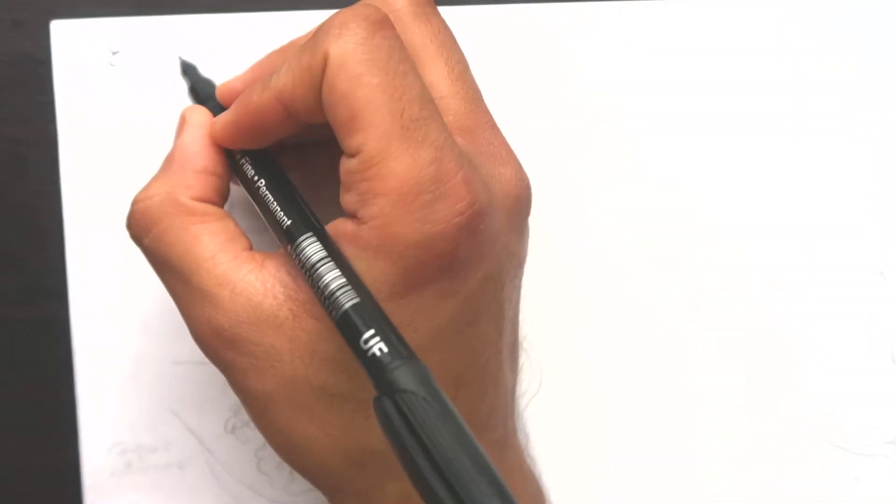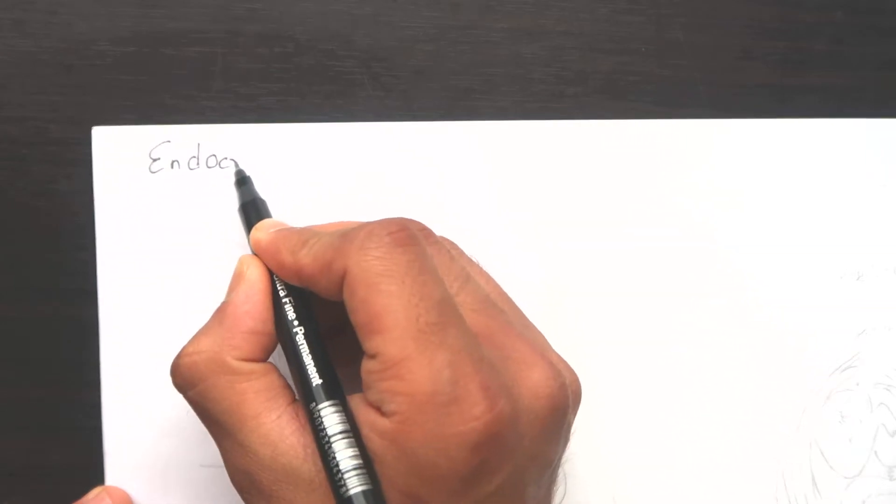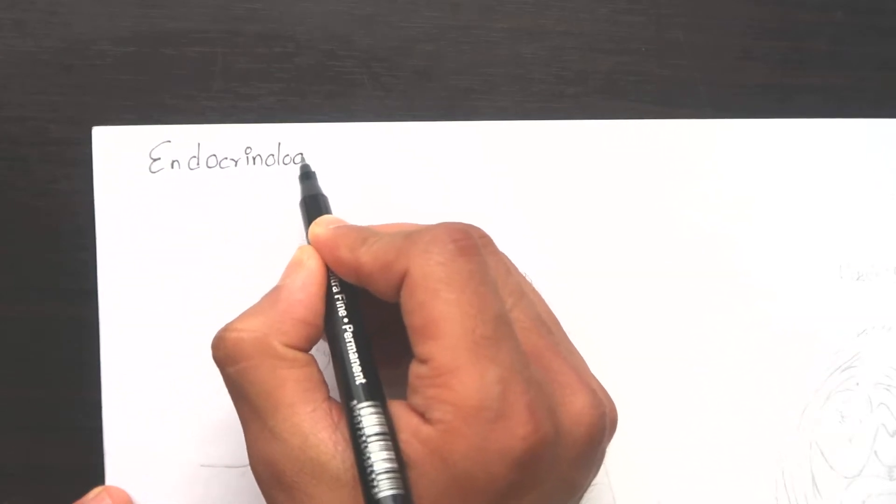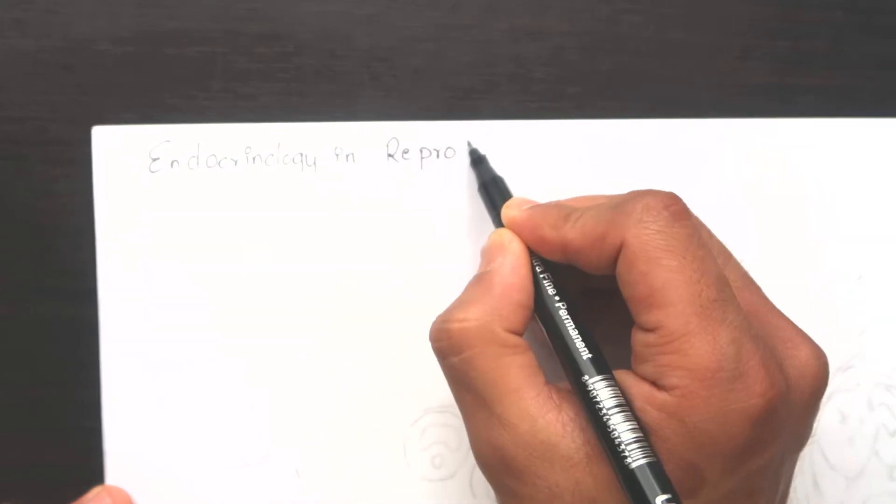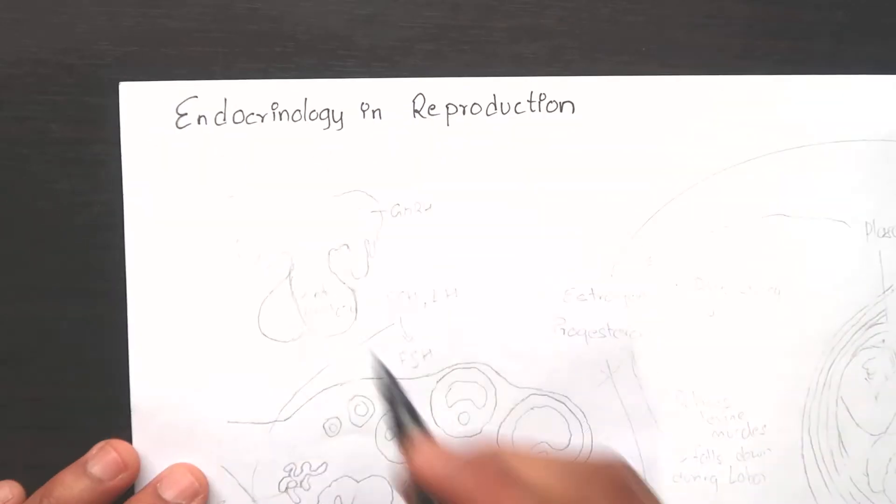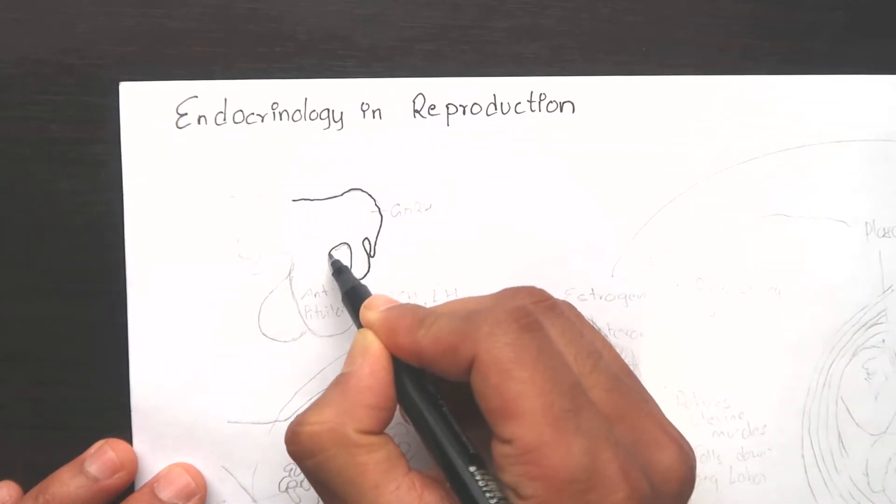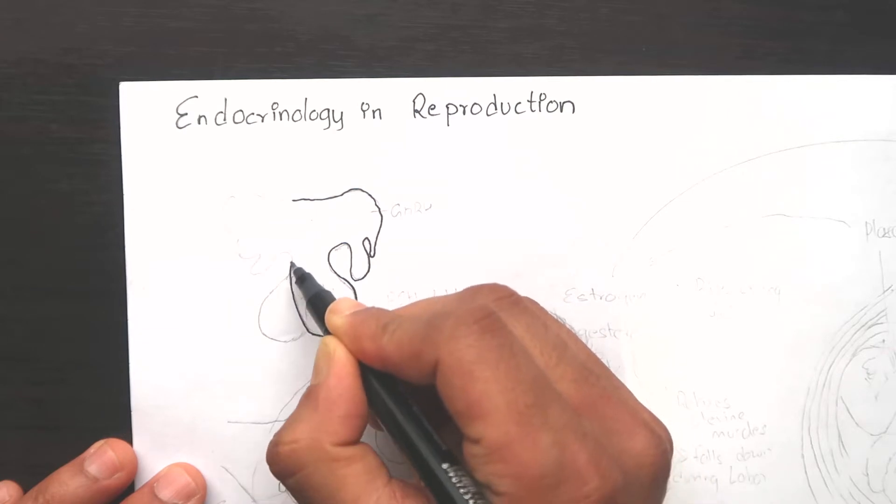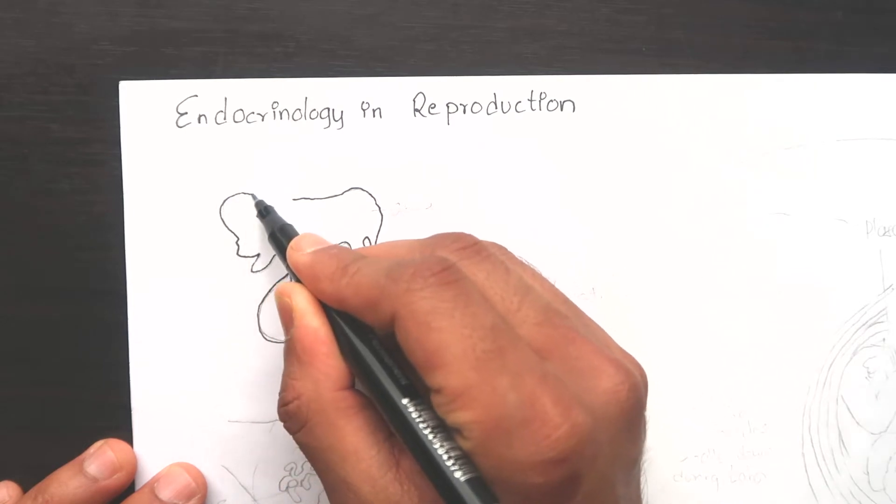The endocrine glands play a very important role in the physiology of reproduction. In this video I'm going to talk about those hormones that aid in the physiological changes during pregnancy. I'm not going to go into very much detail of these hormones and their mechanisms, but we are going to briefly learn about the major functions of these hormones and some changes that occur in the endocrine glands during pregnancy.